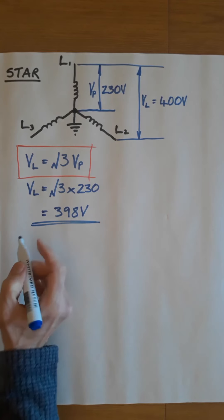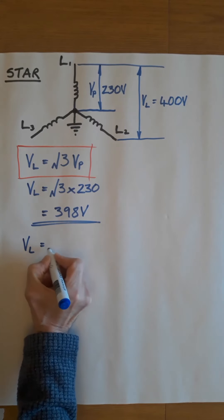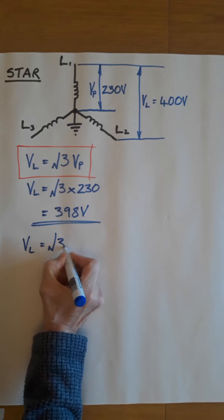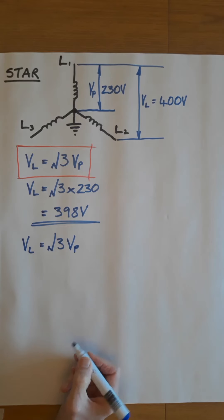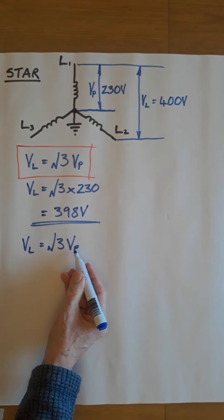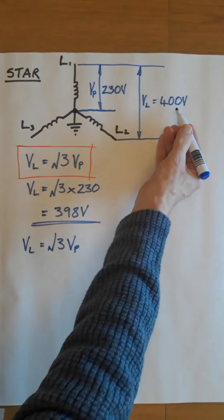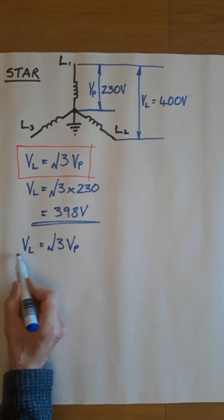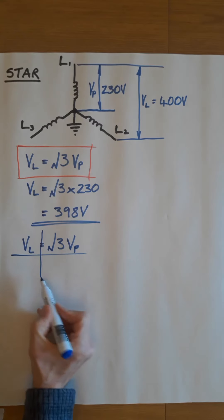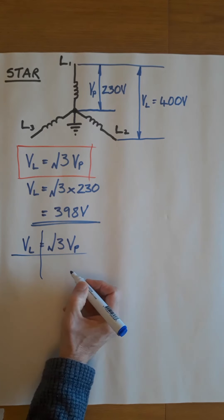If we do the calculation the other way, so we start again with that formula, we can transpose this to make VP the subject. So if I know the line voltage is 400, I can calculate the phase voltage. To transpose this, we need to move the root 3 away to leave VP on its own.